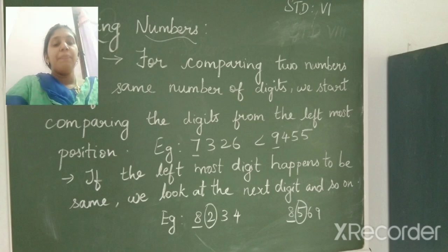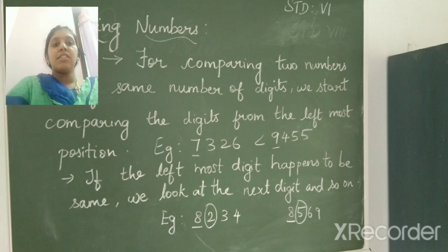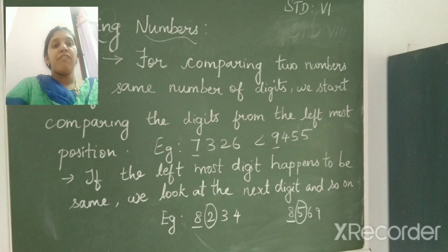In this example, the number on the left most position is same, that is 8. So we move on to the next digit. The next digit is 2 and 5. So we can say 2 is less than 5. So 8,234 is less than 8,569.